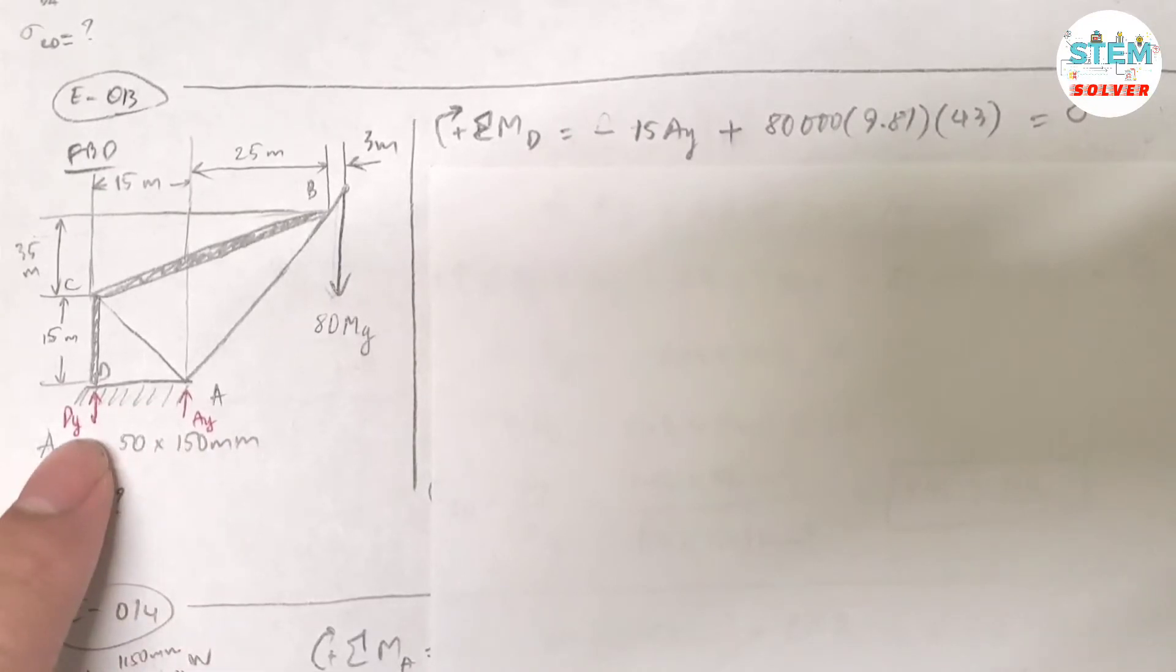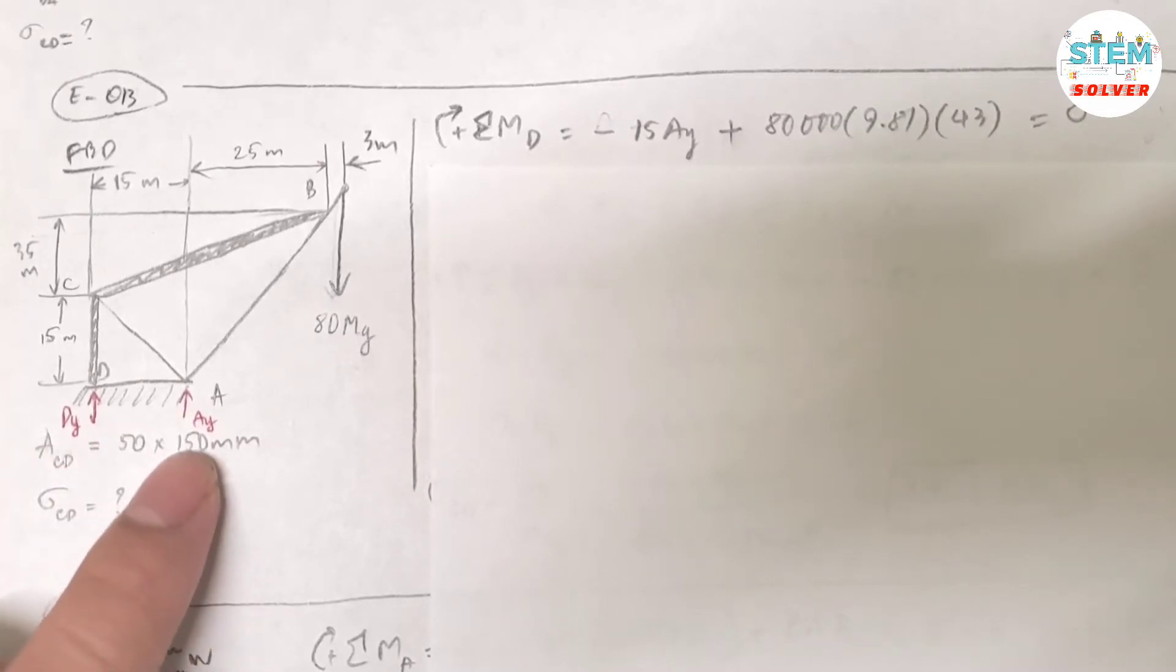So at D, you have a support reaction. I assume upward direction is positive. And another reaction at A. So here's the free body diagram.